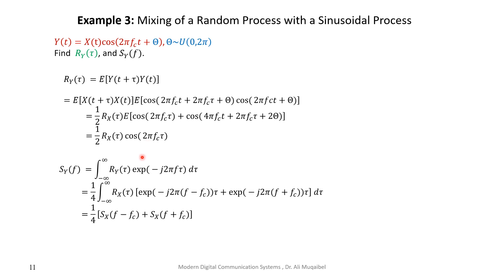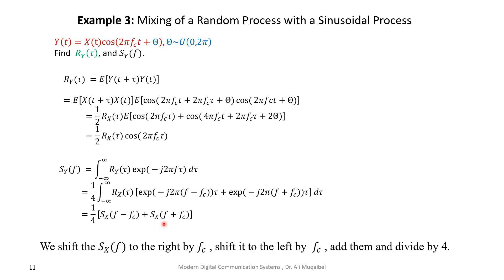The output autocorrelation is related to the input autocorrelation scaled by one-half times a cosine. Taking the Fourier transform to get the PSD, and converting the cosine into exponentials, shows that if you start with input PSD S_X(f) and modulate by a cosine, you get two shifted copies at the new frequencies, each scaled by 1/4. The factor is 1/4 rather than 1/2 because this is power, which scales as the square of amplitude.